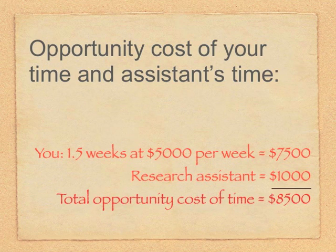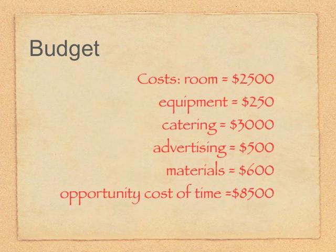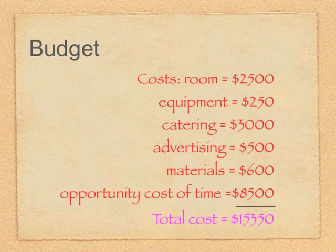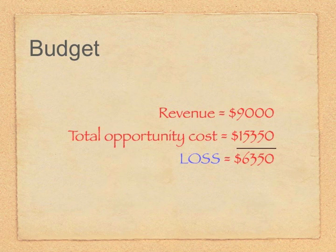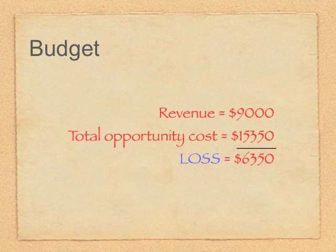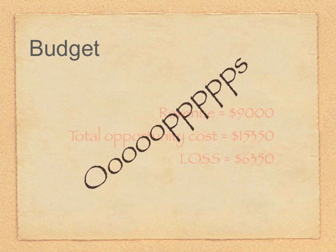So now let's work out the total cost of the course. We have $6,850 in accounting costs, but we also have an additional $8,500 in the opportunity cost of your time and the research assistant's time. So the total costs are $15,350. The revenue from the course is still $9,000, but once we take into account all the opportunity costs associated with running the course, it will make a loss of $6,350. Perhaps it would be a good idea to bin the short course project — it clearly makes a loss when all costs are taken into account.